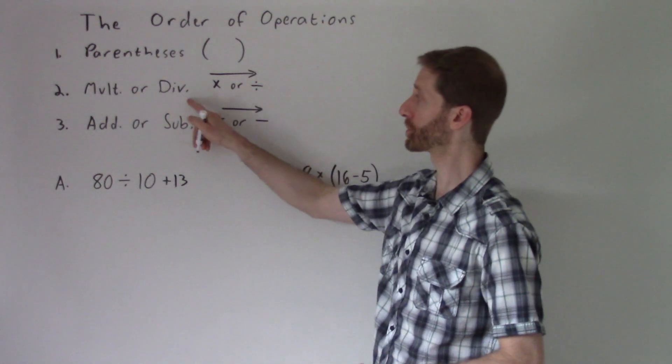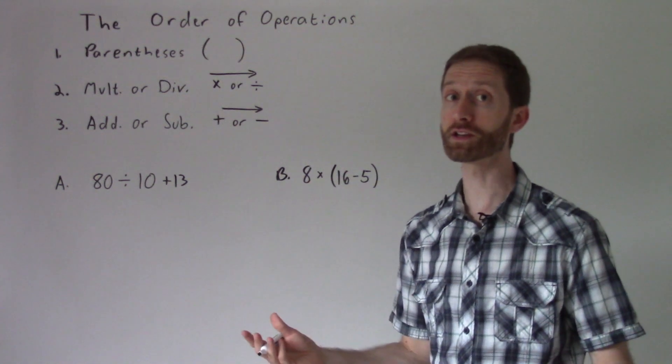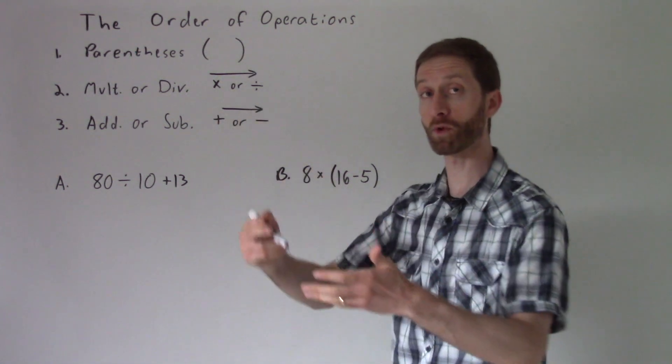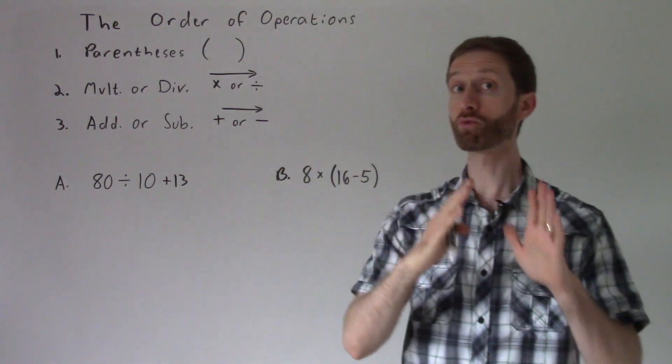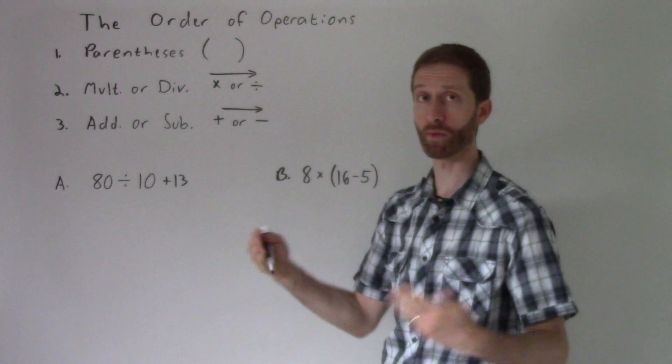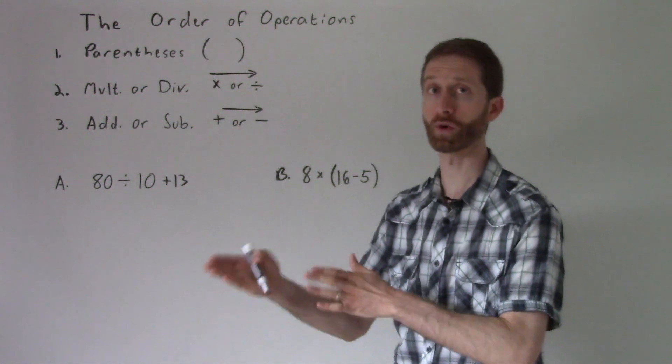Followed by that, we do multiplication or division. So how does that work? Well, if division comes before multiplication going left to right, then we're going to do the division part first. And the same with multiplication, if it comes before division, going left to right.